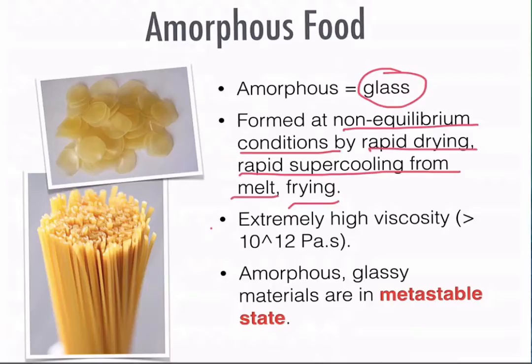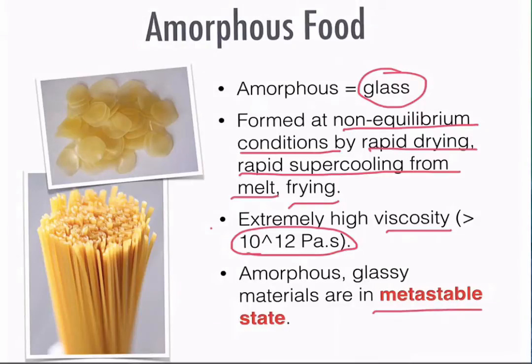One important property of amorphous material is viscosity — it has an extremely high viscosity above 10 to the power of 12 pascal-seconds. Amorphous material is also known as metastable, as opposed to crystalline material which is in thermodynamic equilibrium. A material in a metastable state appears stable to our eyes, but over the long term, the molecules will undergo some changes — though this will take a very long time to observe as physical or chemical changes in the food.